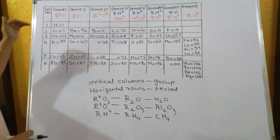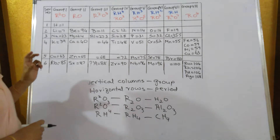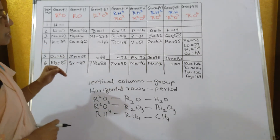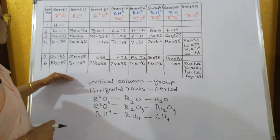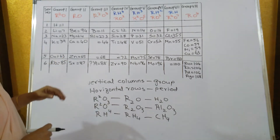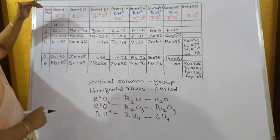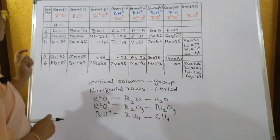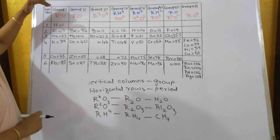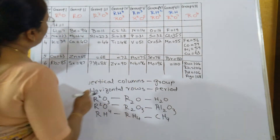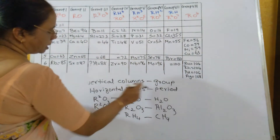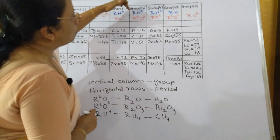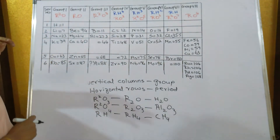Mendeleev ne har ek element ko ek separate card mein element ka naam aur uska atomic mass likha, aur phir atomic mass aur properties ke basis par usne ye periodic table banaya. Usne dekha ki har element jiske properties same hain woh definite interval ke baad wapas repeat hota hai. Usne table mein vertical columns ko 'group' naam diya aur horizontal rows ko 'period' naam diya.